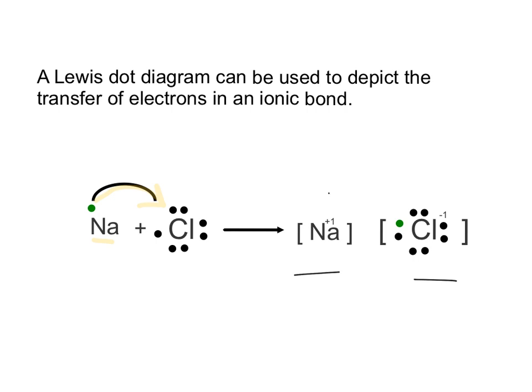Sodium lost an electron, so it became +1 in charge. Chlorine now has all eight — it's got seven that are its own, and the transferred one came from sodium. It gained an electron, has a −1 charge, and we show eight dots around it to show that it fulfilled that energy level.